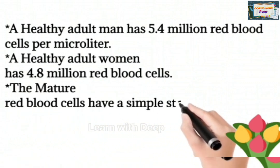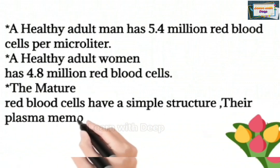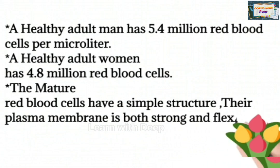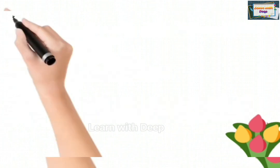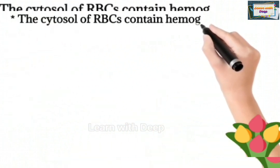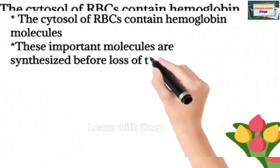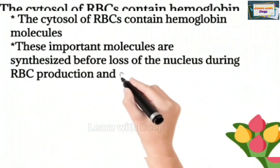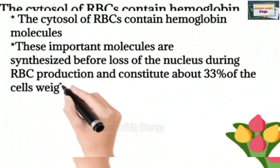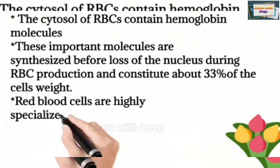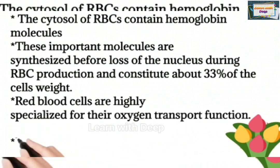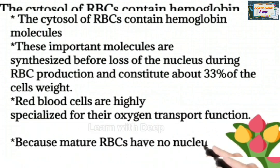Mature red blood cells have a simple structure. The plasma membrane is both strong and flexible. The cytosol of RBCs contains hemoglobin molecules, which are synthesized before the loss of the nucleus during RBC production. Hemoglobin constitutes approximately 33% of the cell's weight. Red blood cells are highly specialized for their oxygen transport function.